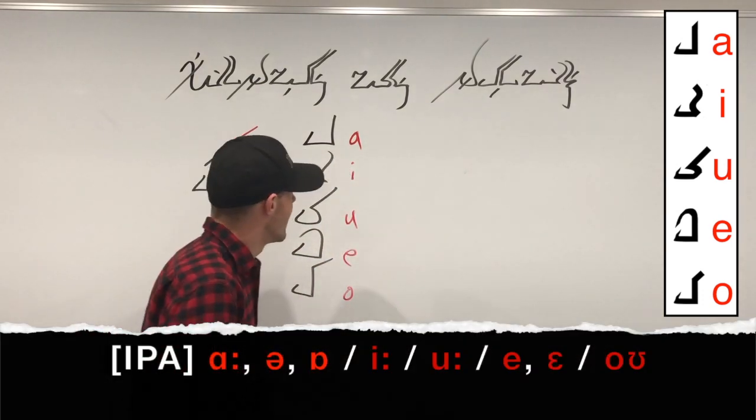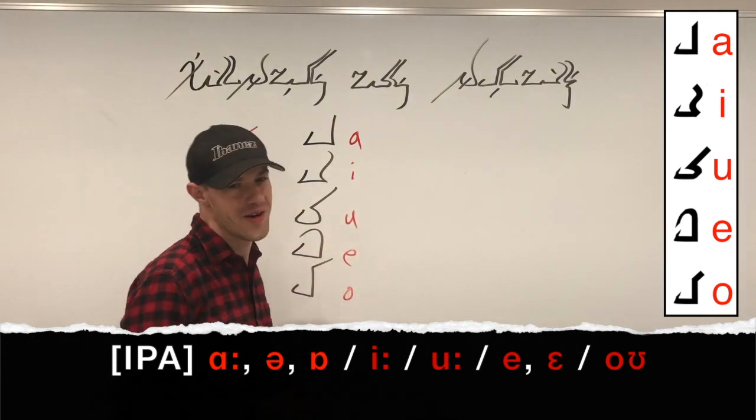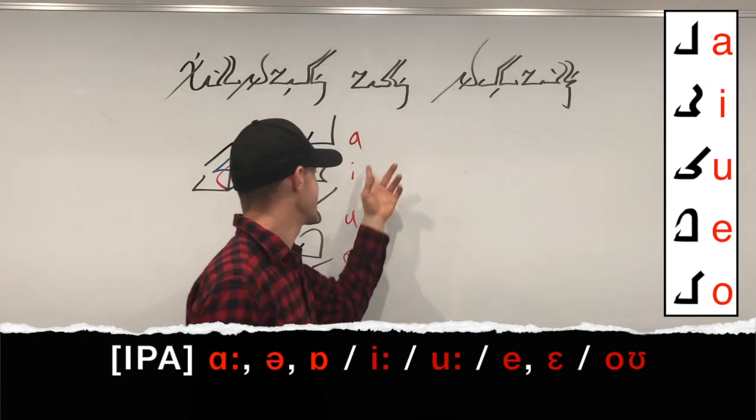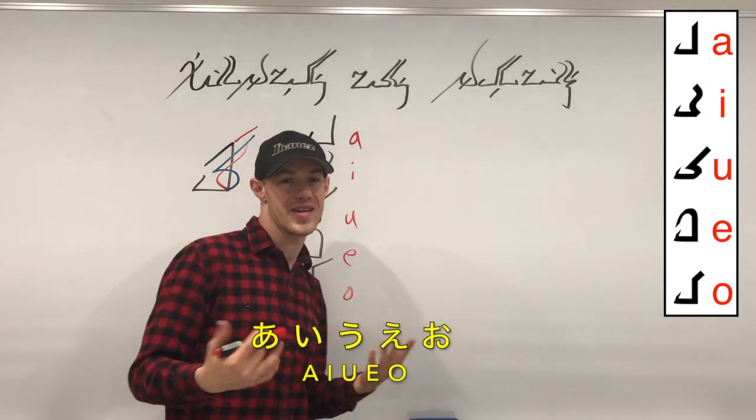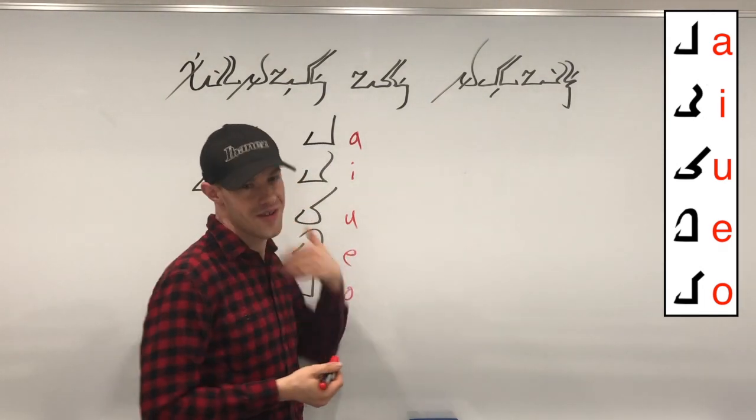And after about the fourth or fifth time of me saying A, E, U, A, O, to those real language enthusiasts, you might notice this is the exact same vowel structure as Japanese. Japanese is my second language, and I'm actually broadcasting from Tokyo, Japan. So when I started creating Nordish, I borrowed from Japanese.